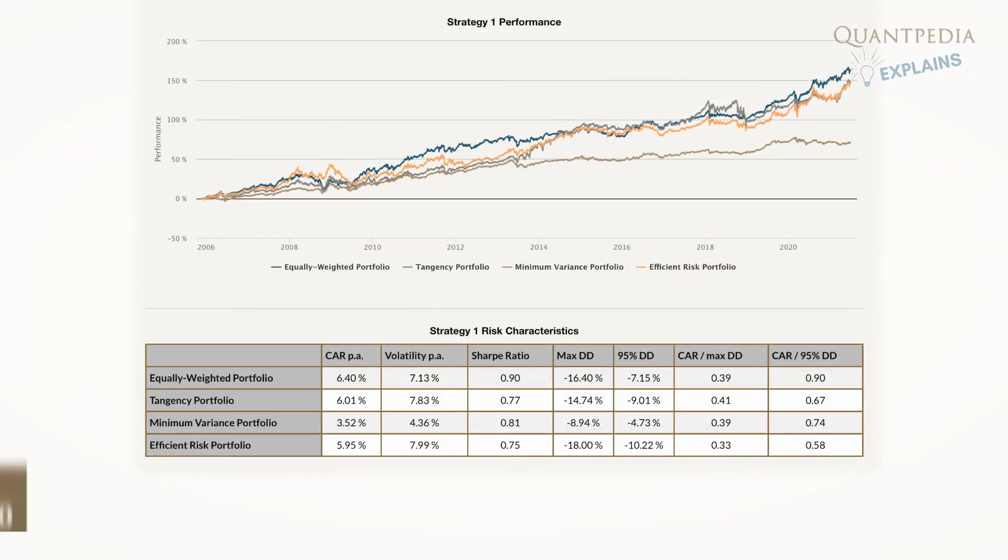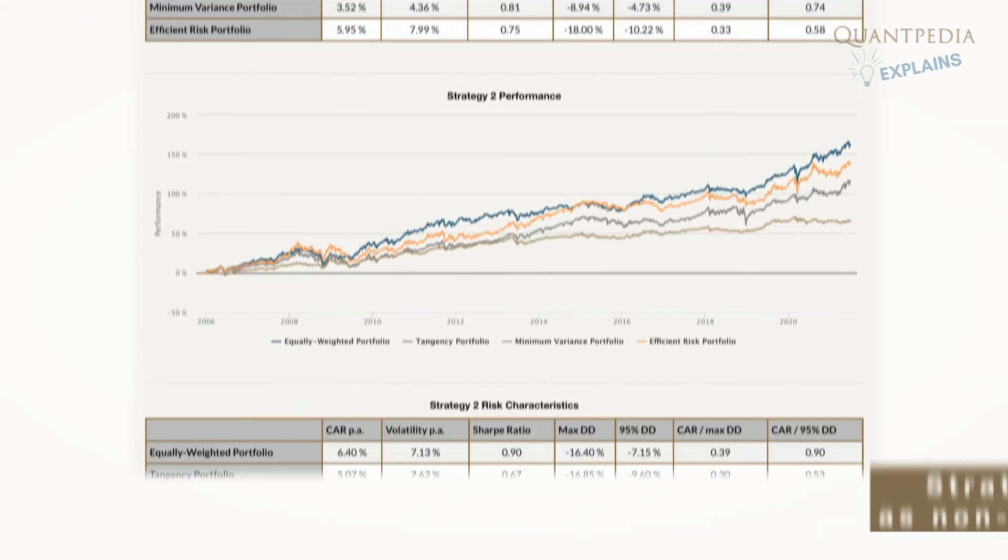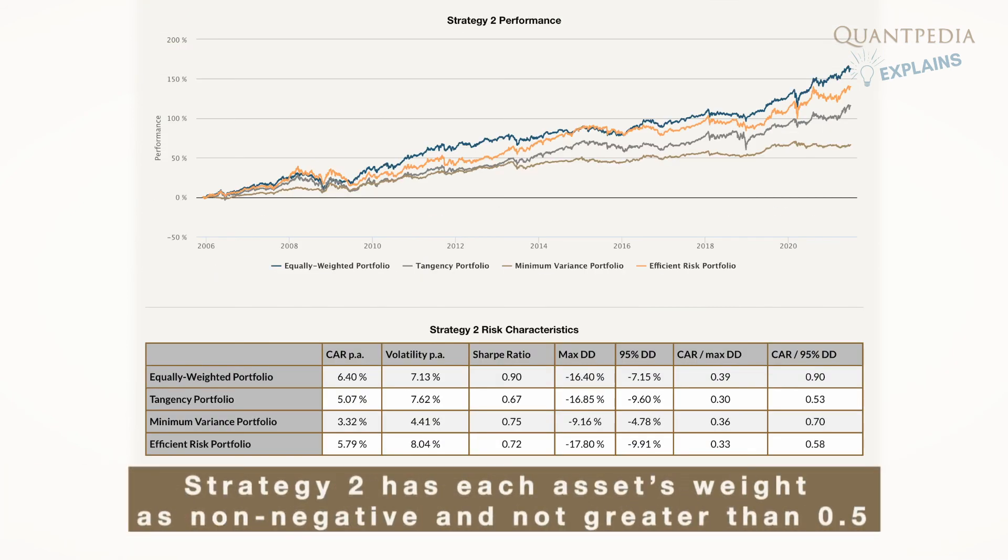Strategy 1 has each asset's weight as non-negative and not greater than 1.0. On the other hand, Strategy 2 has each asset's weight as non-negative and not greater than 0.5.